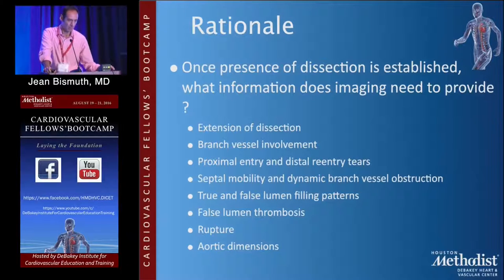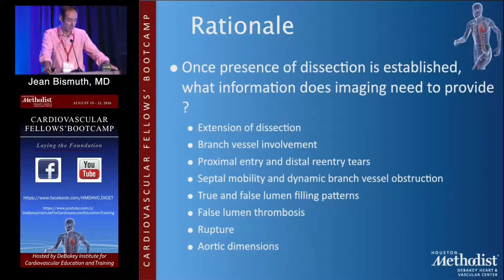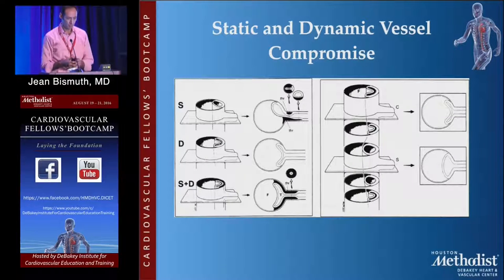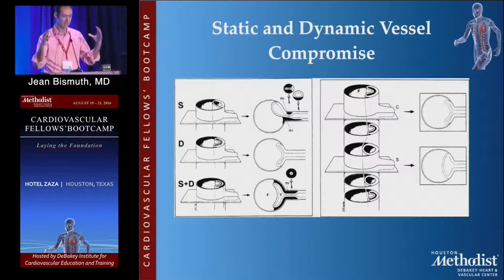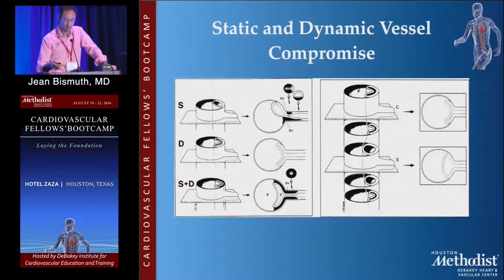What's the rationale behind advanced imaging? Once the presence of dissection is established, you need to know the extension of the dissection, branch vessel involvement, proximal entry, distal re-entries, septal mobility, dynamic branch involvement, true and false lumen filling patterns, false lumen thrombosis, rupture, and aortic dimensions. CT scans are static pictures — you're only looking at one phase of the cardiac cycle. But a lot is happening in an aorta, and with a dissection flap there's even more. You can have both static portions — for example, hematoma extending into a branch vessel — and dynamic components, or a combination.